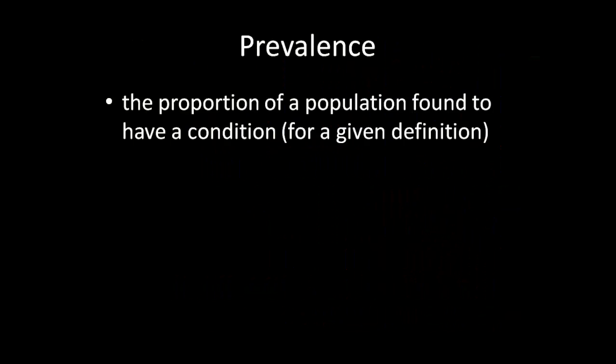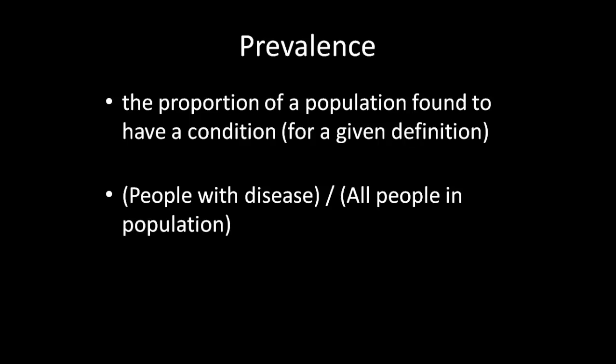And that brings us to the concept of prevalence. Prevalence is the proportion of people in a population who are found to have a condition. In this case, it would be people with the disease divided by all the people in the population, or 15 over 100 — so 15% prevalence.